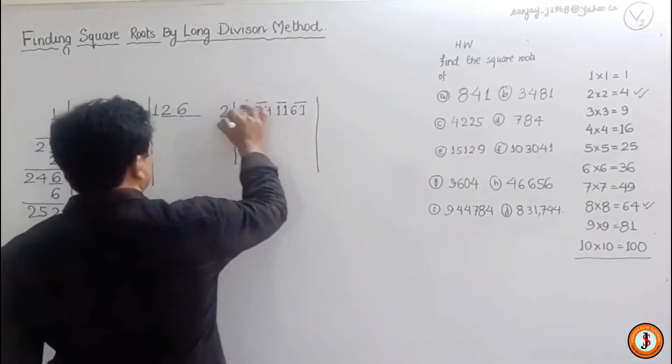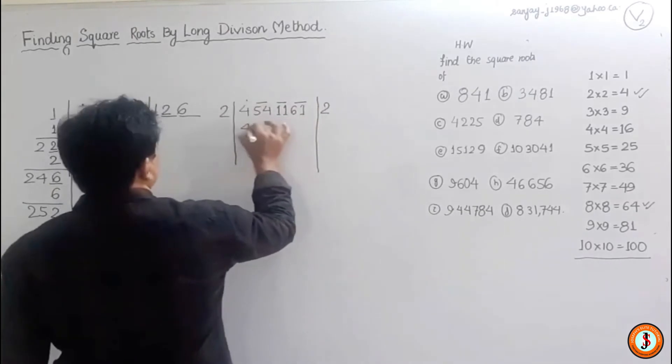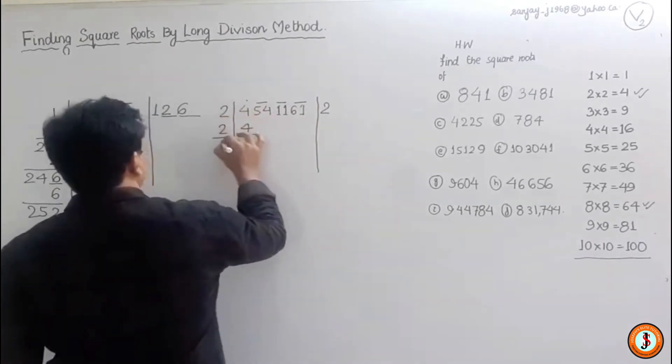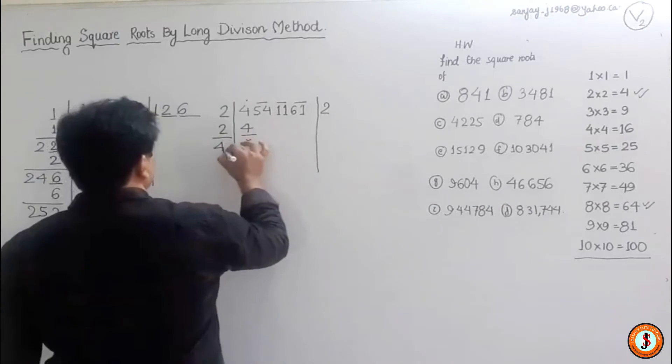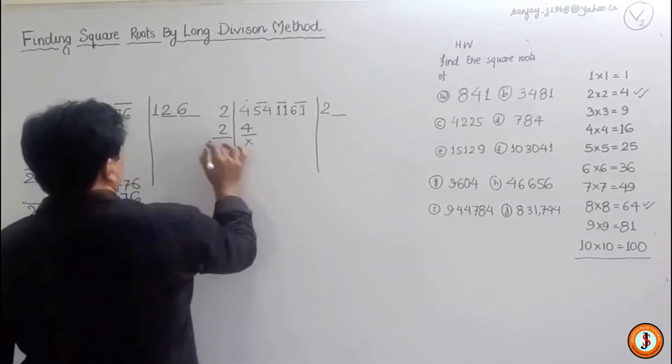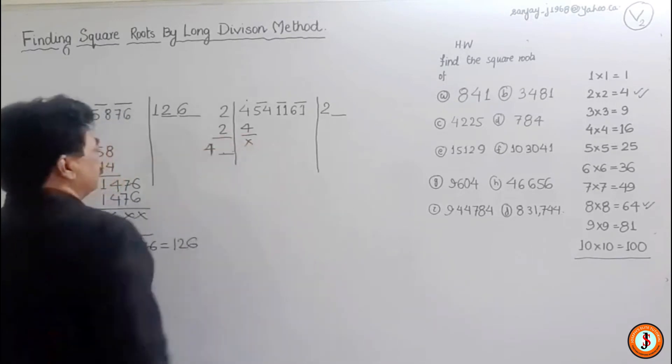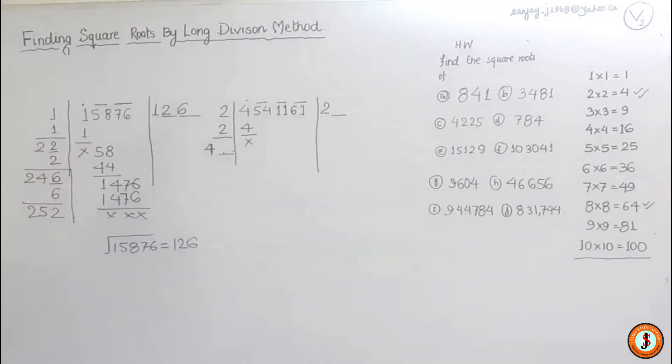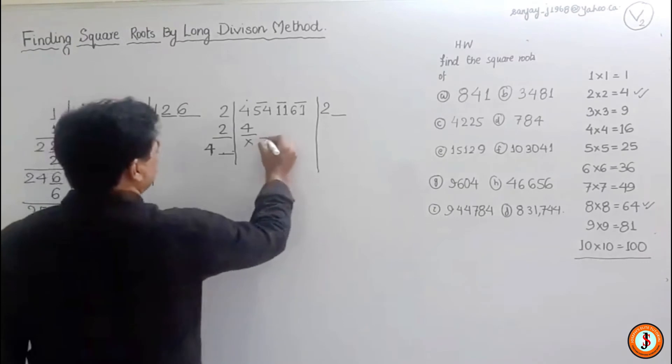One times one is one. Two times two is four. And this four goes for a toss. Two times two is four. Four comes down. We leave the space over here. Squeeze it out. Four times four, voila. Now that's right. Now what happens? We get down the 54 here.